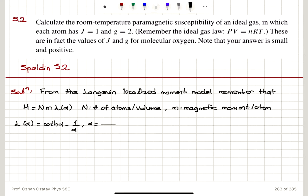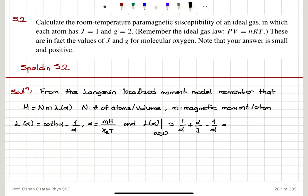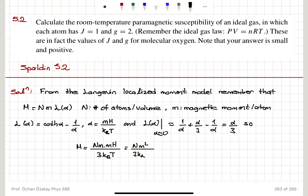In CGS units, alpha is given as M times the magnetic field H divided by thermal energy k_B T. For typical small values of alpha, the Langevin function behaves as alpha over 3, which comes from the Taylor series expansion of coth(alpha) minus 1 over alpha. So the approximate behavior is linear with alpha: alpha over 3.